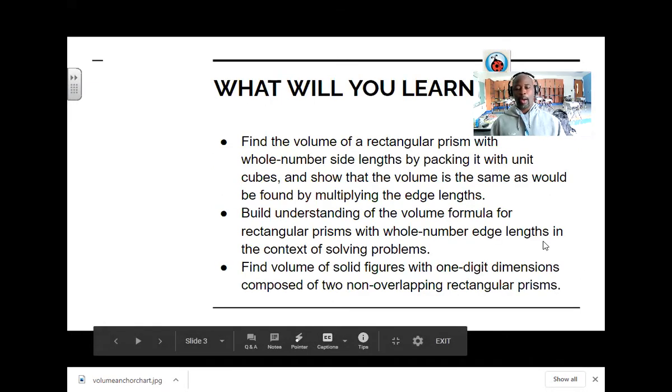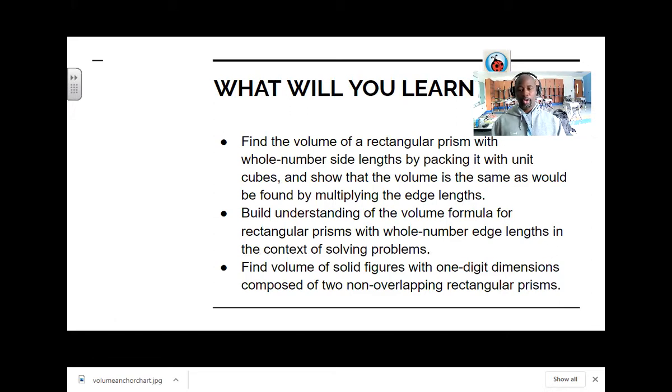Things you're going to learn while we're doing volume: You're going to learn how to find the volume of a rectangular prism with whole number side lengths by packing it with unit cubes. You're going to build a standard volume formula for rectangular prisms with whole number edge lengths in the context of solving problems. And you're going to find the volume of solid figures with one-digit dimensions composed of two non-overlapping rectangular prisms. That basically means you're going to learn how two shapes together or gel together, not overlapping but they're connecting to each other, and you're going to learn how to find the volume of that total shape.